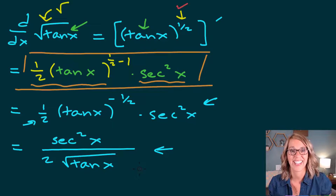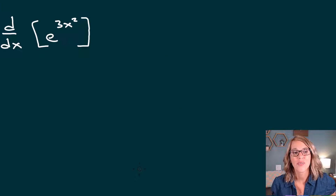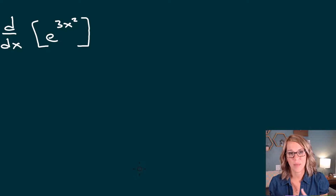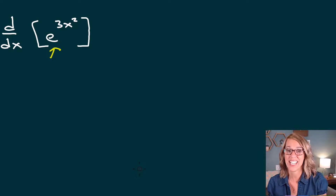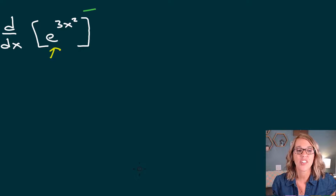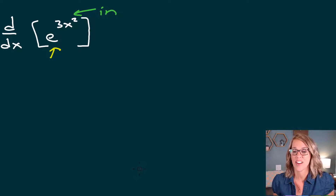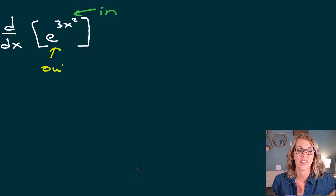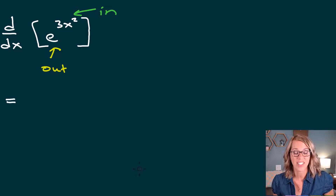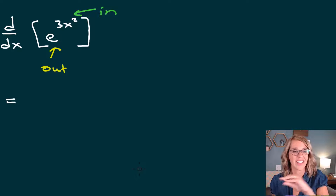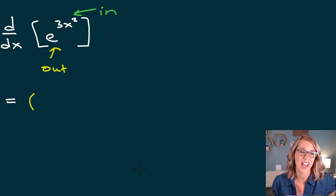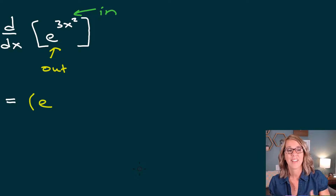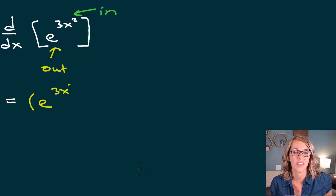Let's do another one. In this next example, I've got the derivative of e to the 3x squared. I do have a composition of functions. e to the x is the outer function, and the inner function is 3x squared. As I apply the chain rule, I'm going to take the derivative of the outer function keeping 3x squared intact. Since e to the x has itself as its derivative, the derivative of the outer is just e to the 3x squared — no change there.